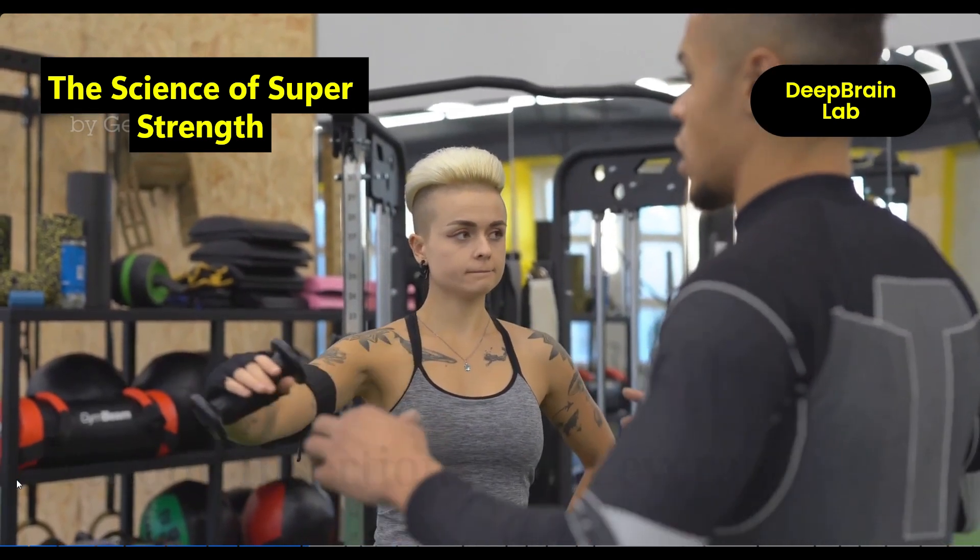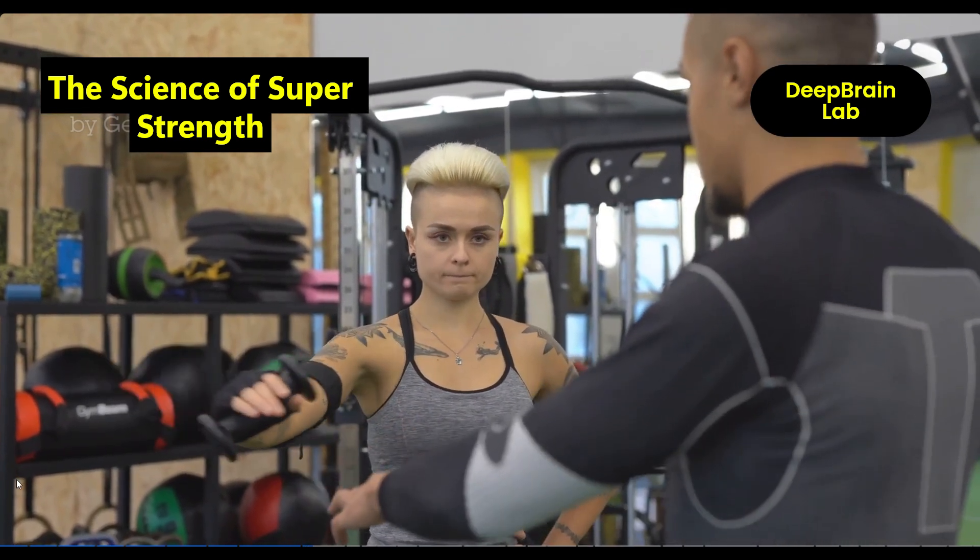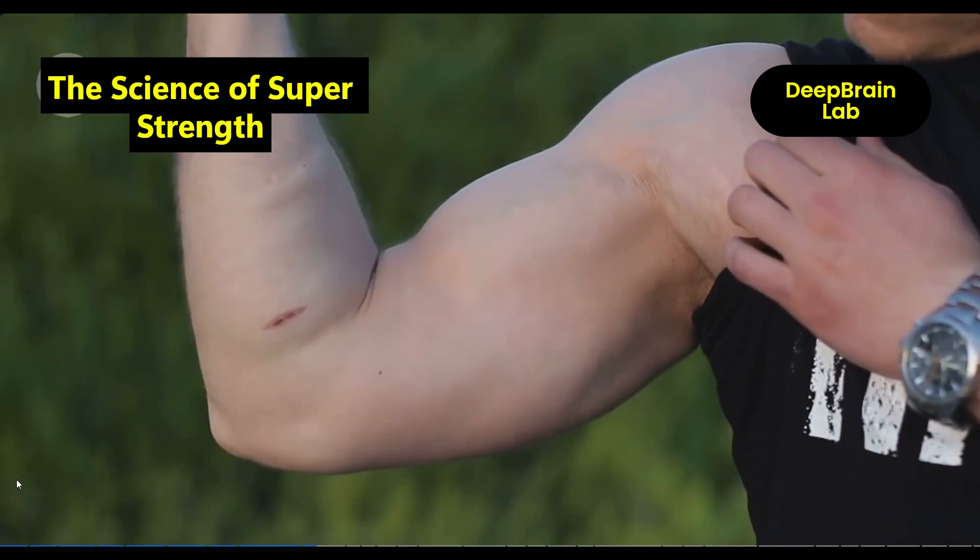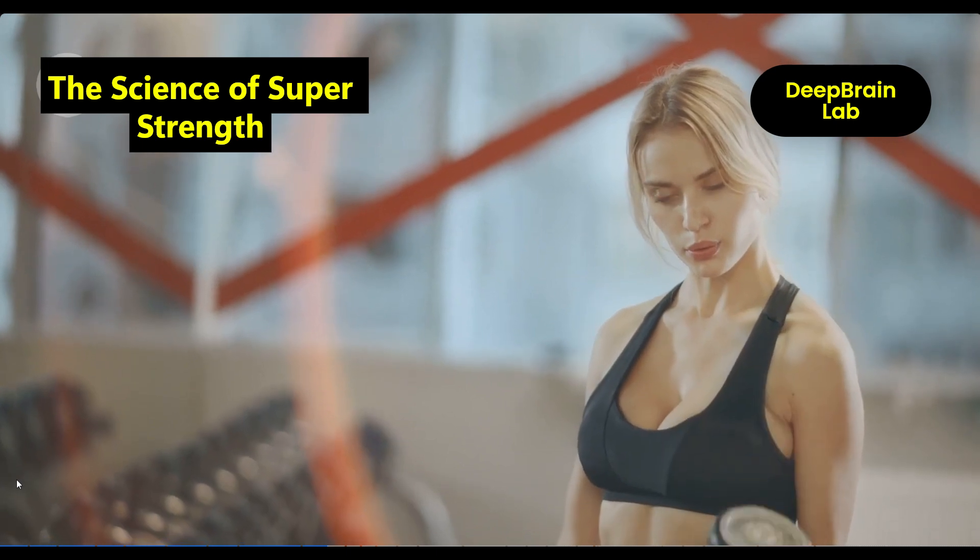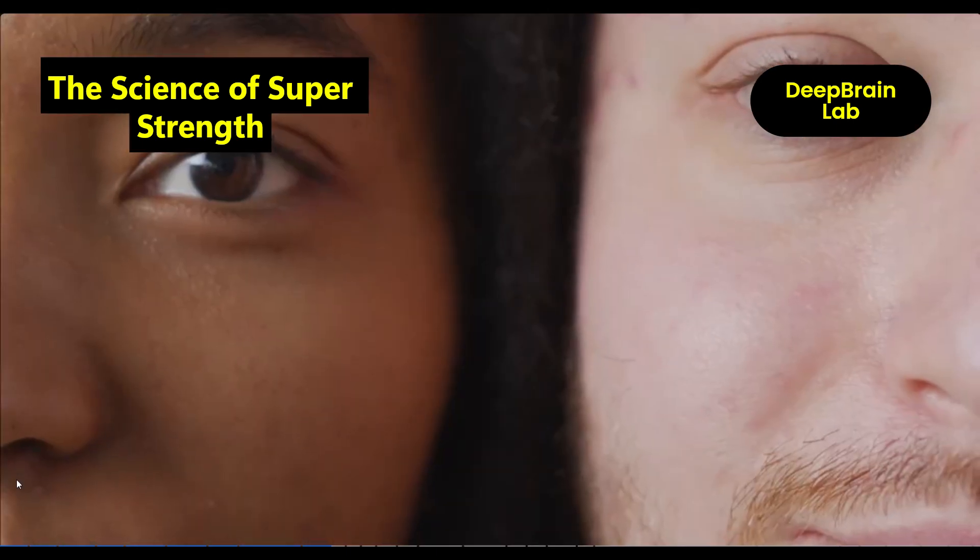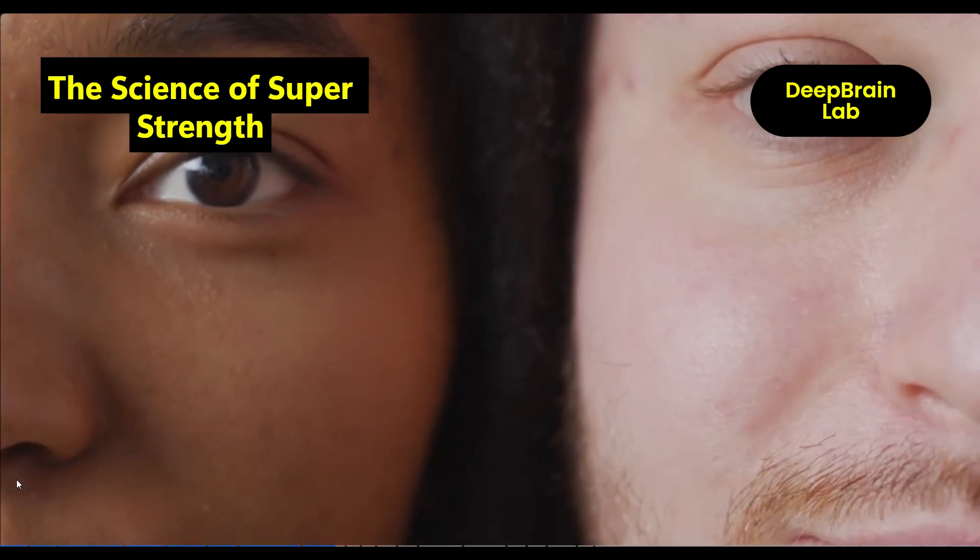But it's not just fiber type. Tendon insertions also matter. If your bicep tendon attaches lower on the forearm, your leverage improves, giving you more curl strength without bigger muscles. In short, genetics doesn't just shape your looks; it builds the foundation for your mechanics, muscle potential, and raw output.